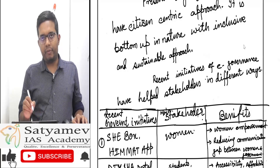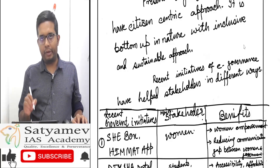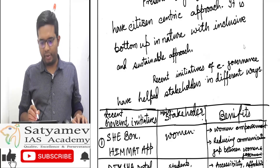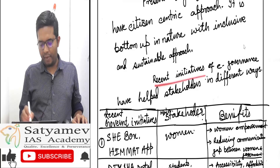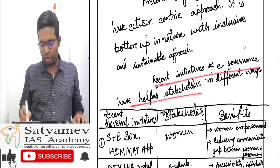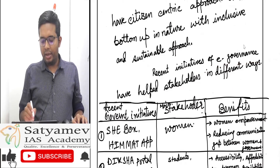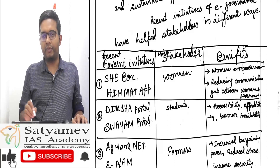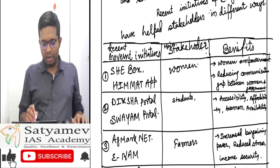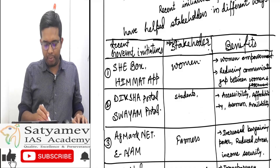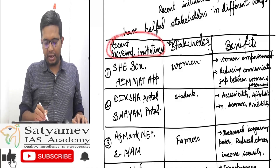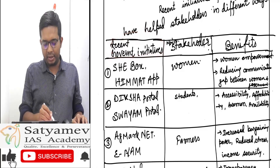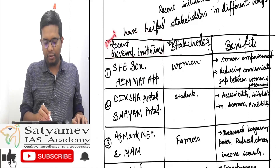Since we have given two paragraphs for what is good governance, we are now going to address the second part of the question. Recent initiatives of e-governance have helped stakeholders in different ways. Here you can write examples of recent government initiatives, the major stakeholders, and the benefits.